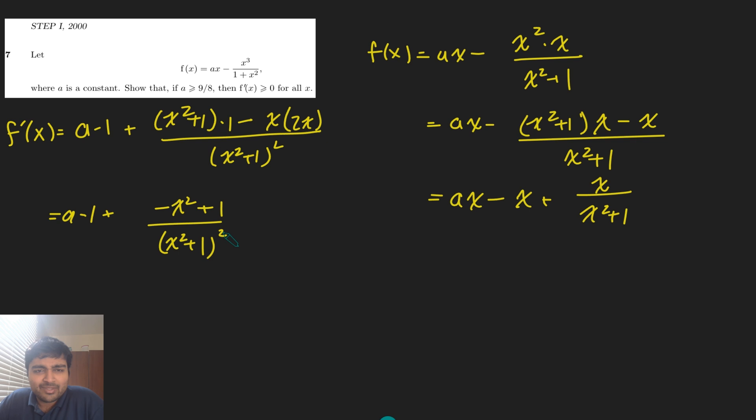Okie dokie, great. So this is what f'(x) is. It's still kind of a messy expression. And we want to show that this thing here is always at least 0, provided a is at least 9 eighths. Well, let's think about this. If a is at least 9 eighths, then a minus 1 is going to be at least 1 eighth. So what we need to do is show that this thing that we're adding on is at least a negative 8.